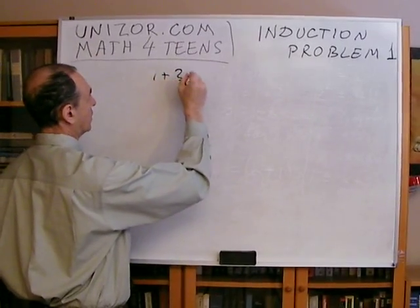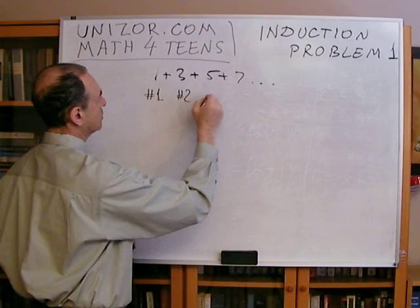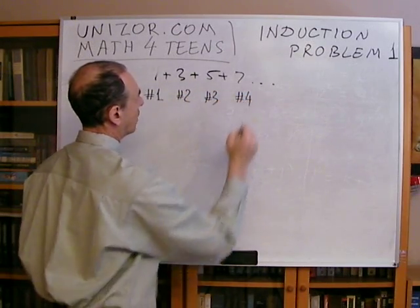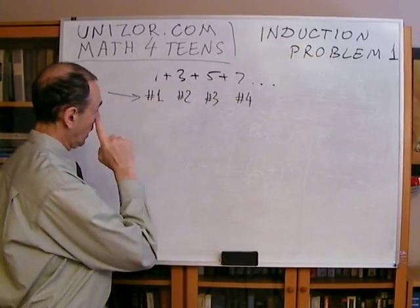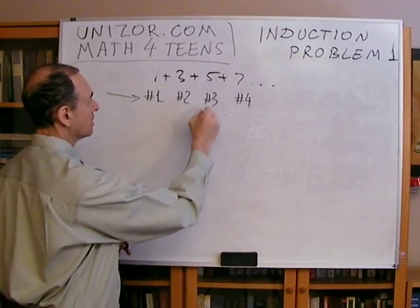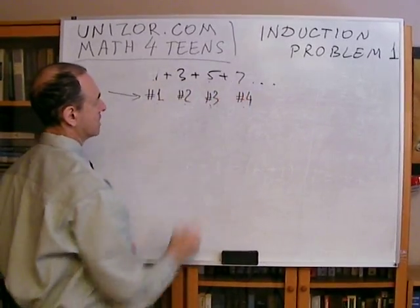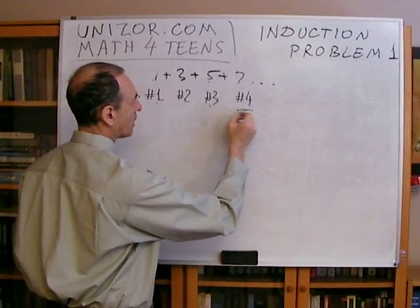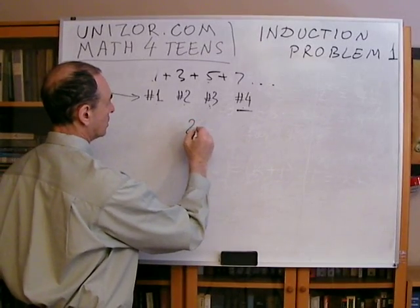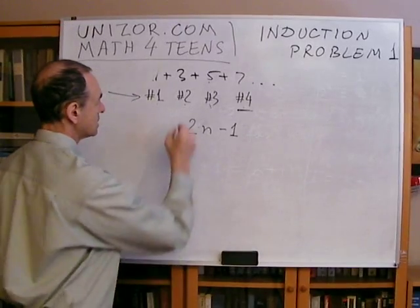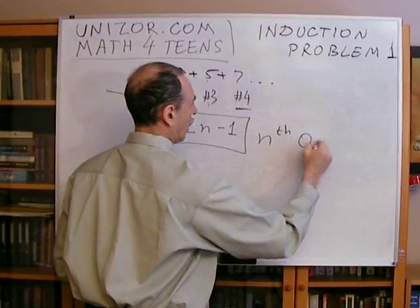If you have one plus three plus five plus seven, et cetera, this is member number one, member number two, member number three, member number four. This is the number of the member of our sum. How can we connect the number of this member and this value? One and one, two and three, three and five, four and seven. How can we say that the number four in this sequence of odd numbers is seven? Well, that's actually quite simple. It's two times n minus one. This is a general formula for the nth odd number.